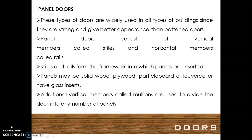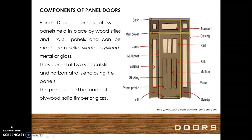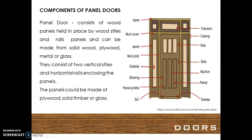Additional vertical members called mullions are also used to divide the door into any number of panels. The panel door consists of wood panels held in place by wooden styles and rails. Panels can be made from solid wood, plywood, metal, or glass. They consist of two vertical styles and horizontal rails enclosing the panels. The panels could be made of plywood, solid timber, or glass.